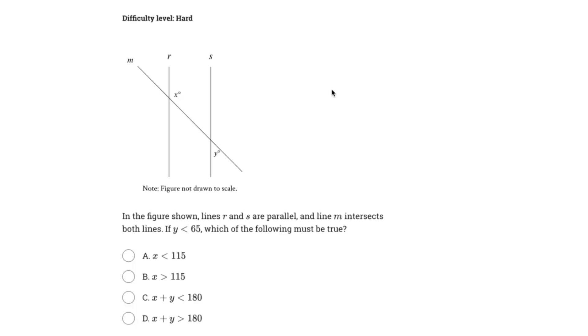All right, everyone. So we're back from the SAT math video. We're back on that geometry grind. This one says in the figure shown, lines R and S are parallel and line M intersects both lines. So we've got a parallel line cut by transversal.